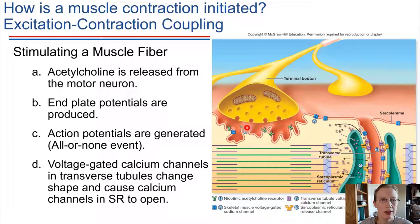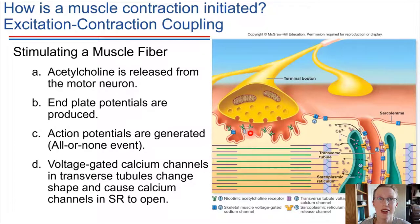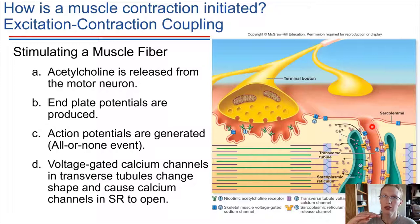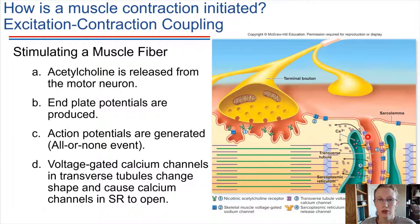When acetylcholine binds, we know this can result in depolarization of the postsynaptic cell, and that results in an action potential just like we've seen before in the nervous system. That depolarization wave travels out throughout the sarcolemma — the plasma membrane of the muscle cell. Muscle cells have these interesting channels called T-tubules, or transverse tubules, that cut right through the muscle cell. The depolarization wave travels through the transverse tubule, and that causes voltage-gated calcium channels to open, and calcium floods into the cytoplasm of the muscle cell.